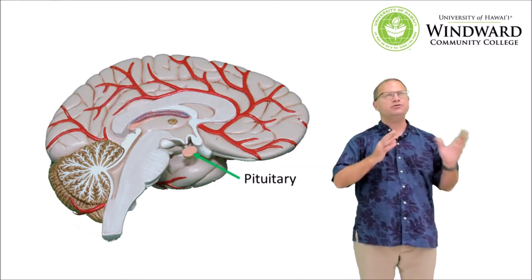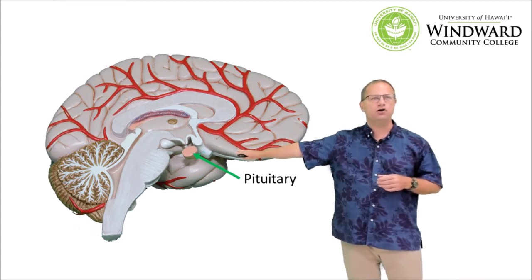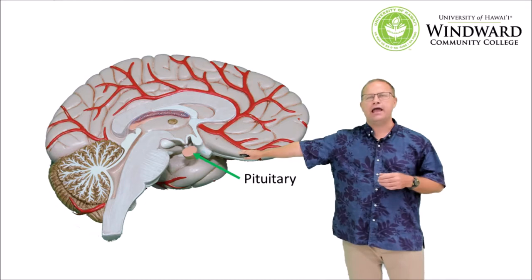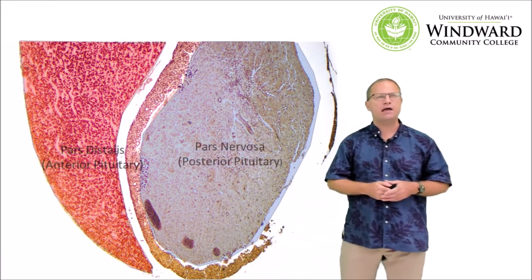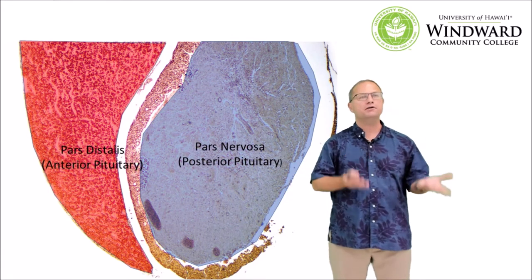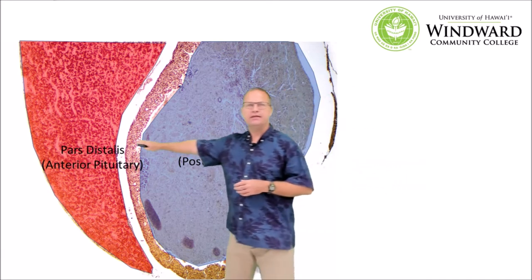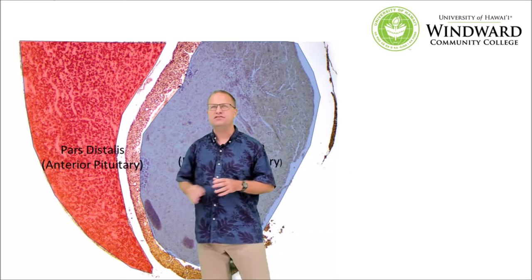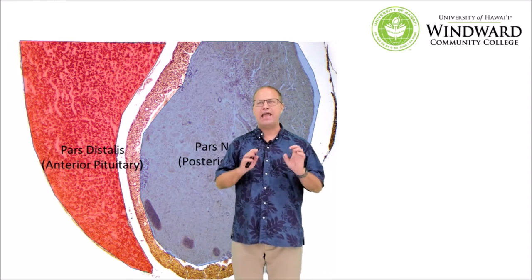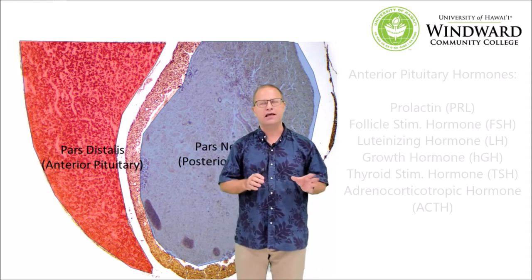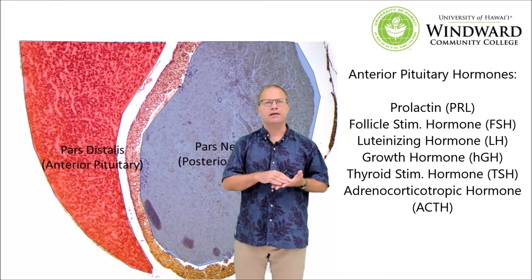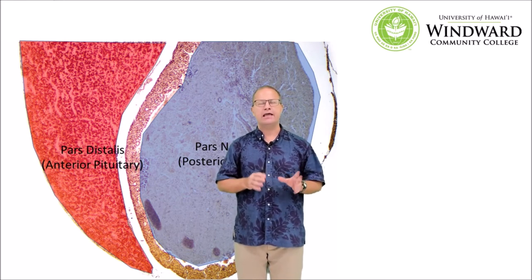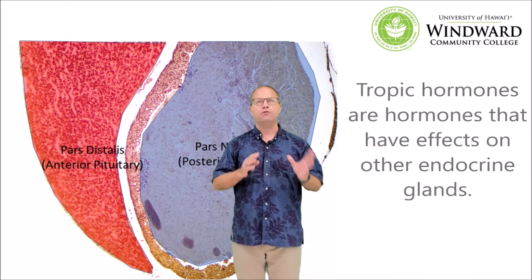Next we have the pituitary gland, which is second in command. It has two different lobes called the anterior and posterior pituitary. Looking at the histology, it looks like a yin and yang symbol, divided into two lobes called the adenohypophysis and the neurohypophysis, or the pars distalis and pars nervosa. The adenohypophysis, or anterior pituitary, secretes seven different hormones, including growth hormone, follicle stimulating hormone, luteinizing hormone, and adrenocorticotropic hormone. These hormones are produced in the anterior pituitary and have effects on other endocrine glands, so they're called tropic hormones.